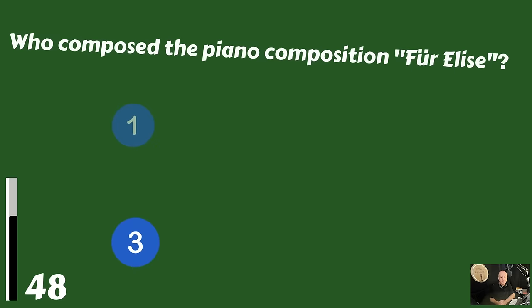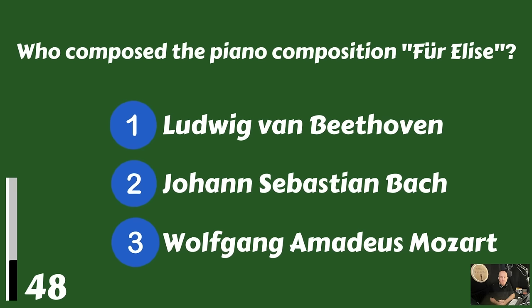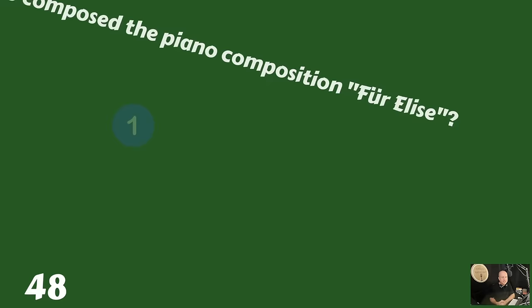Who composed the piano composition Für Elise? Ludwig van Beethoven, Johann Sebastian Bach, or Wolfgang Amadeus Mozart? Für Elise was composed by Ludwig van Beethoven.